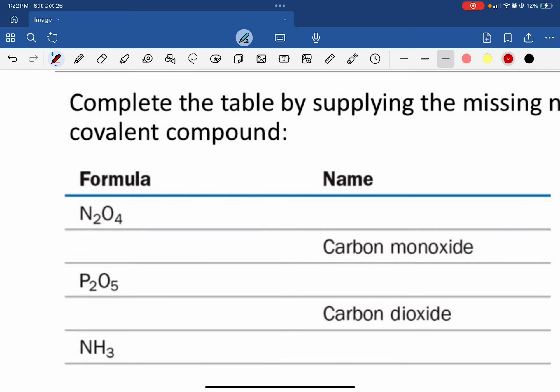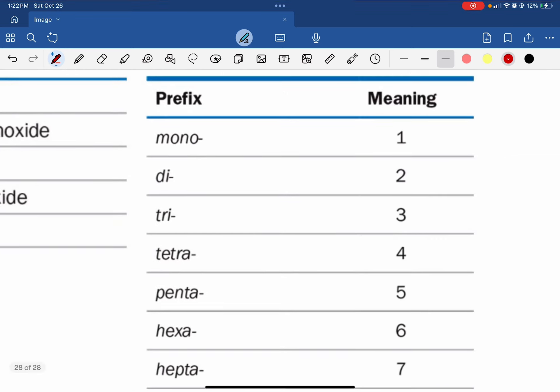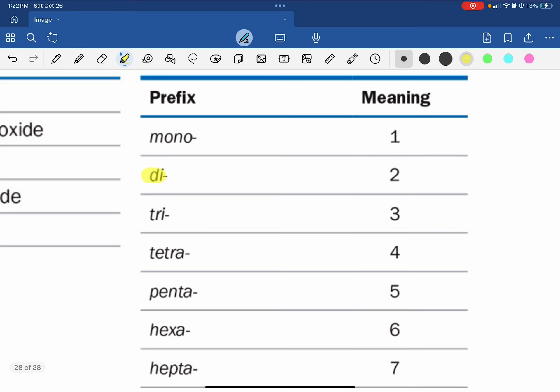So zooming in here on our table, there are two nitrogens and four oxygens. We would go over to our Greek table and see that two is di, and four is tetra.